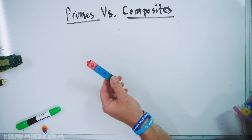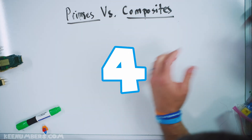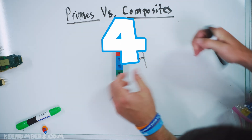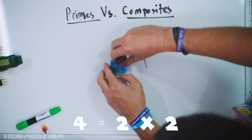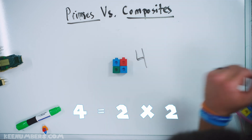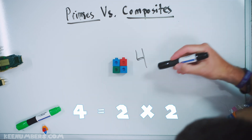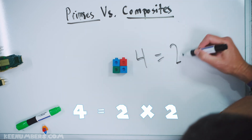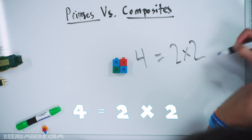This number, 4, is a composite. Why? Because you can make it into a rectangle — it's a 2x2.